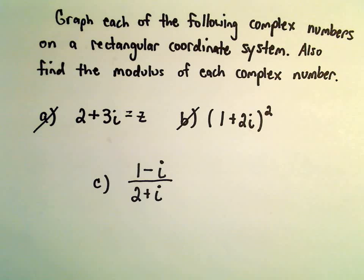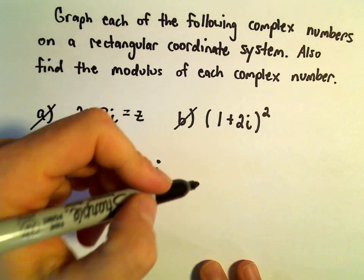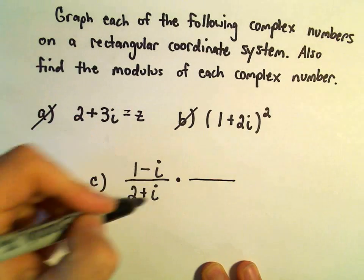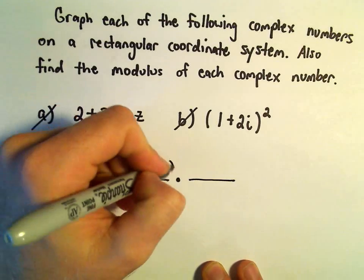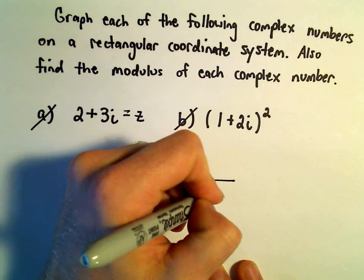To write this in the more familiar a plus bi form, what we do is we multiply by the conjugate of the denominator, which means we just flip the sign in the middle.